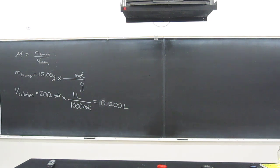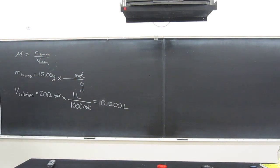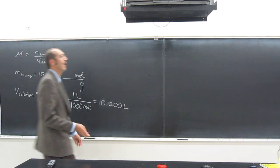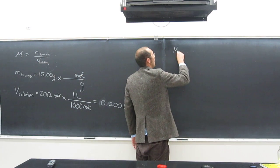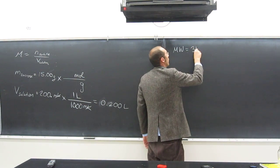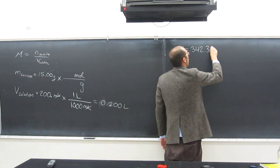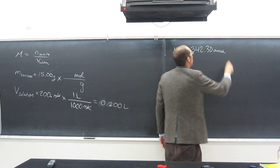That's how you convert grams to moles. You guys remember this. Remember this from chapter, what was it? Three or something like that? So, let's write the molecular weight down. What does it say? The molecular weight is 342.30 amu.